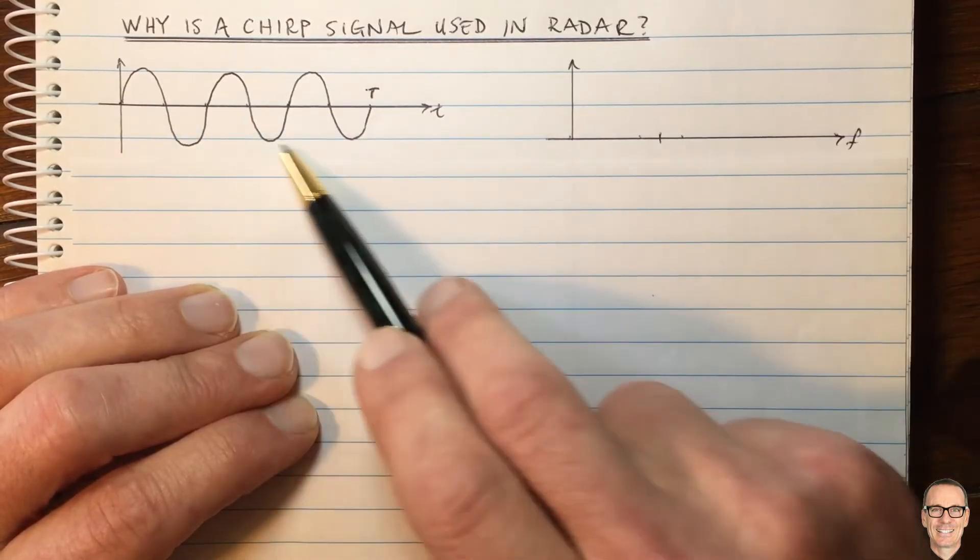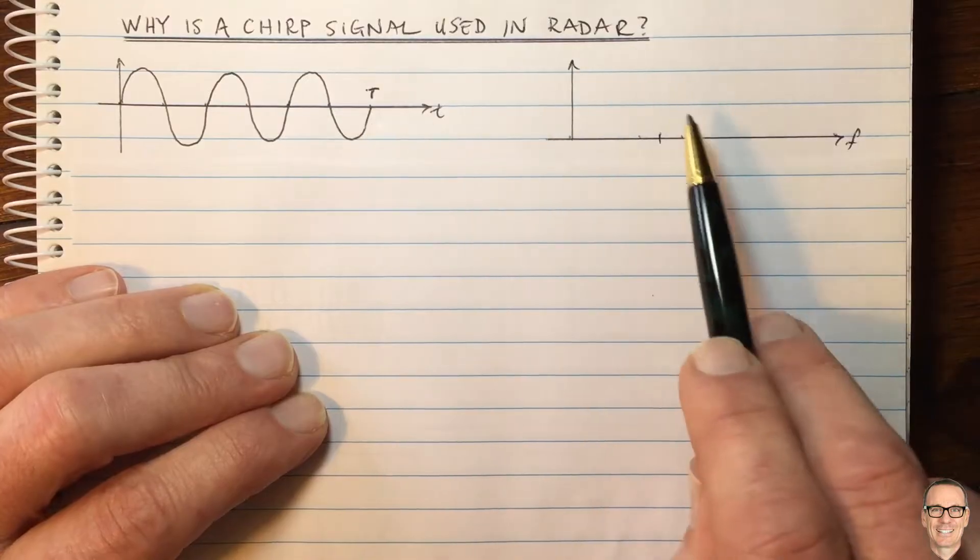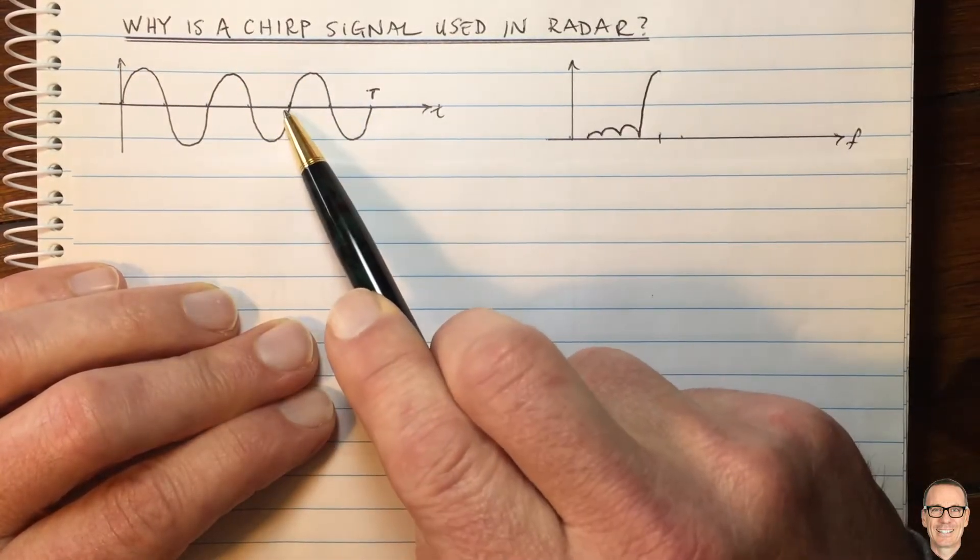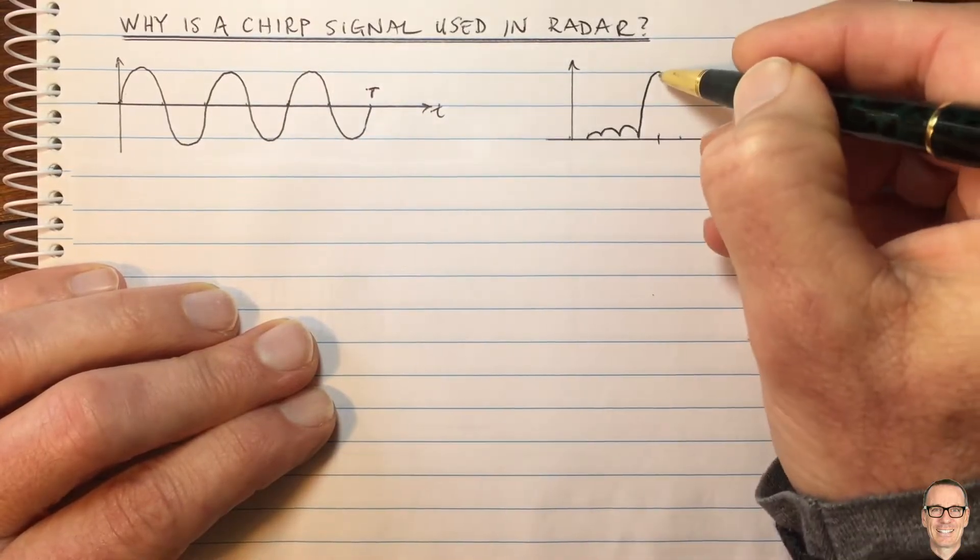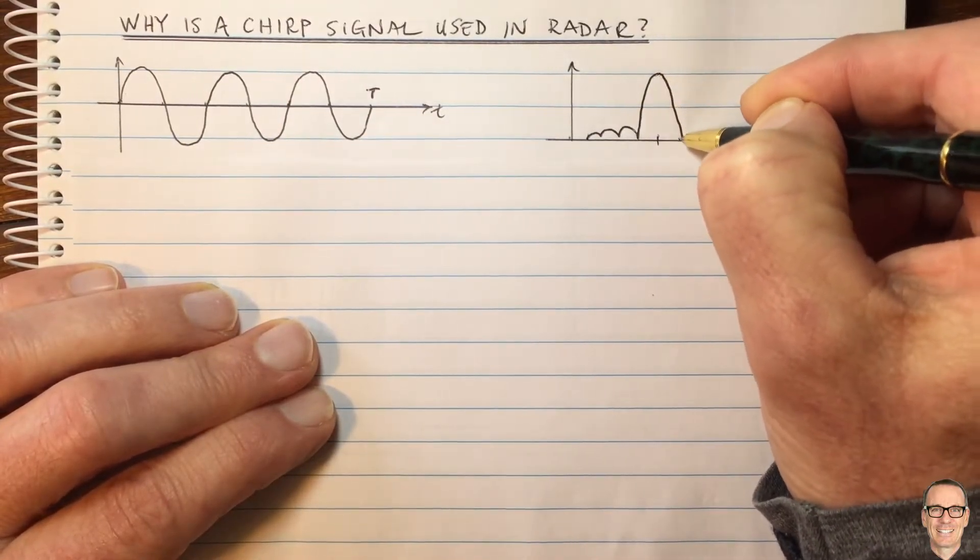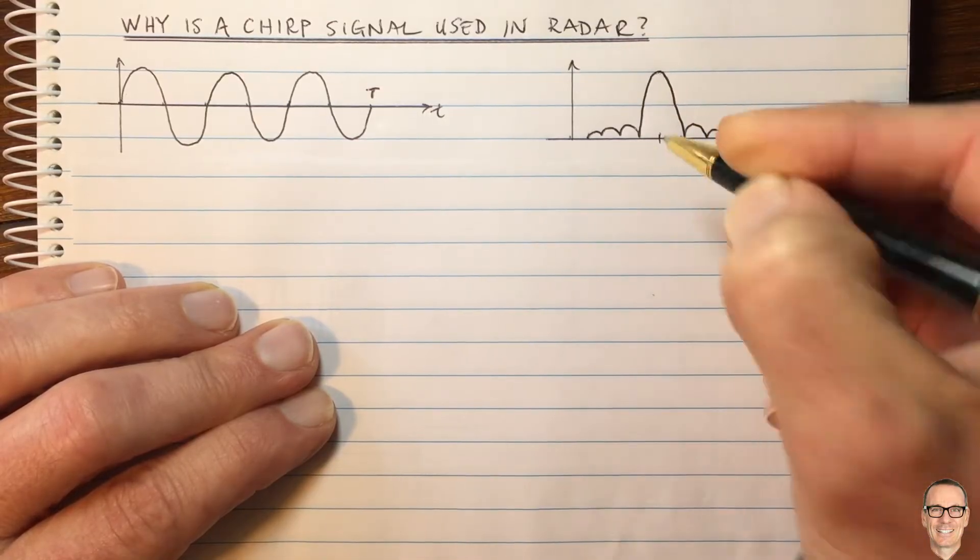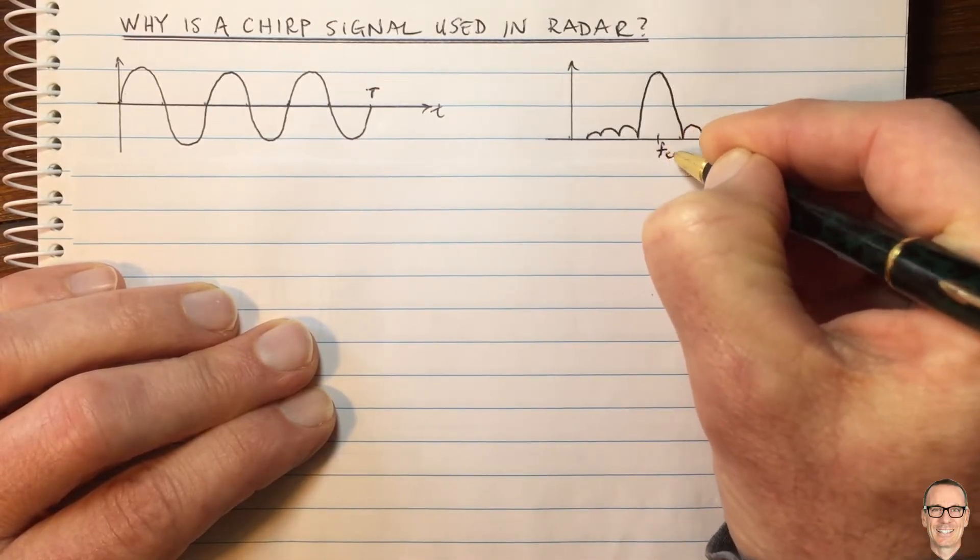Well, let's think about this signal in the frequency domain. And this is a rect function multiplied by a sine wave. So in the frequency domain, you're going to be having a sinc function convolved with the impulse at that center frequency, FC.